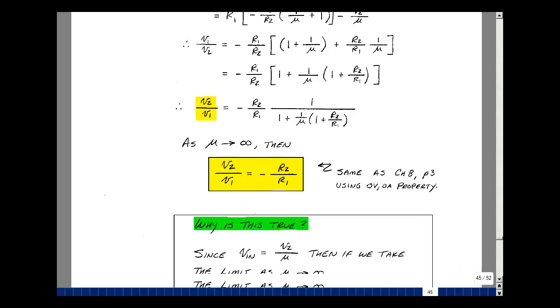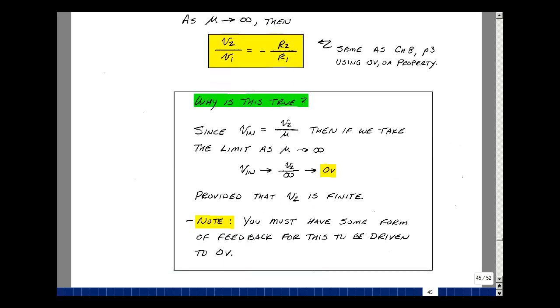Why is that true? Well, there's no current going into the op-amp. That was part of our definition. But the voltage across the terminals of the op-amp we showed on the last page was V2 over mu. If V2 is finite and we divide it by a very large number, it approaches 0. It has some kind of feedback to tell the input terminals to shrink to 0 based on the gain of the voltage-controlled voltage source. And this is treating the op-amp as a voltage-controlled voltage source.